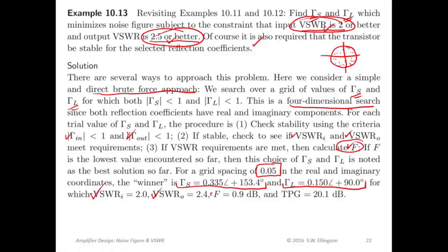The noise figure was 0.9 dB. That compares to 0.73 dB when I did not constrain the VSWR. So we see a little bit of degradation of noise figure here, but that's apparently just the price I have to pay for meeting the VSWR requirements. And then in that situation, I found the TPG was 20.1 dB. And that's compared to 18.5 dB for the unconstrained noise figure minimization-based design.